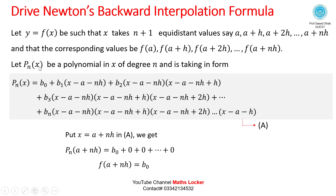Let Pn(x) be a polynomial in x of degree n, taken in the form: Pn(x) = b₀ + b₁(x − a − nh) + b₂(x − a − nh)(x − a − nh + h) + b₃(x − a − nh)(x − a − nh + h)(x − a − nh + 2h) + ⋯ + bₙ(x − a − nh)(x − a − nh + h)⋯(x − a − h). Call this equation (A).